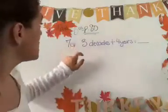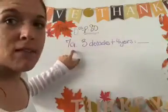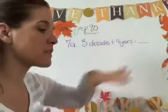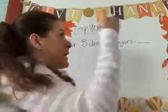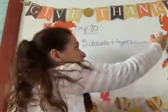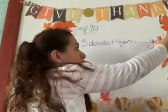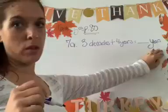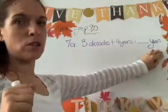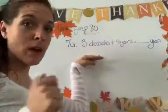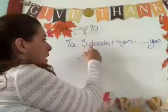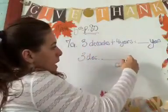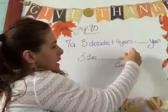So the first one we're going to do is number seven, letter A together. Three decades plus four years equals how many years? Okay, so we want years. So which one do we need to change? Put decades on the bottom. How many years are in a decade?